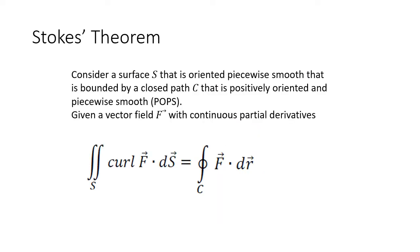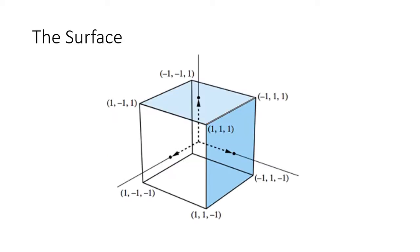Luckily, we have Stokes' Theorem, and that is the whole point of this video. We consider a surface that's oriented and is bounded by a closed path C. Instead of having to calculate that surface integral of the curl of F dot dS, I can calculate the closed path line integral of just F dot dR. So instead of looking at this surface, what I can consider is the boundary path.